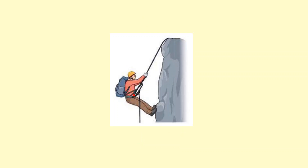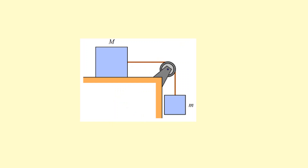For a climber on a rope, the rope pulls the climber toward the top right, and the climber pulls the rope down toward the bottom left — an equal and opposite force. Both are tension forces acting in opposite directions. The climber also pushes on the rock; if he pushes the rock to the right, he experiences an equal and opposite force to the left. Both of these are normal reaction forces.